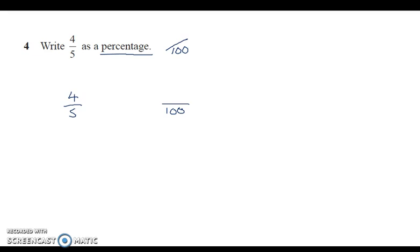So some of you might be able to go straight from five to a hundred. You might know what you can multiply five by. If you multiply by 20, you will get a hundred. If you do the same to the top, times by 20, four lots of 20, it's going to give me 80. So the answer is 80 out of 100, which is going to be 80%.